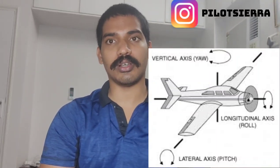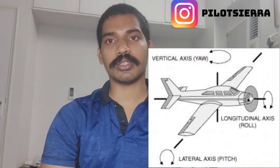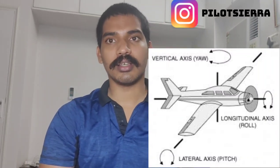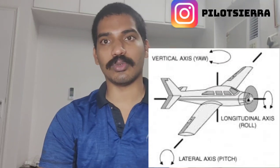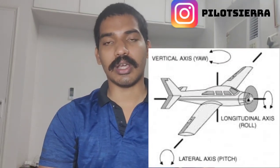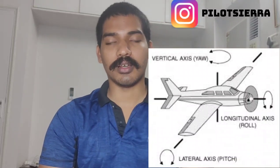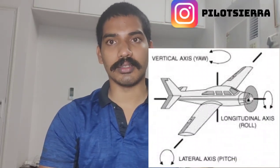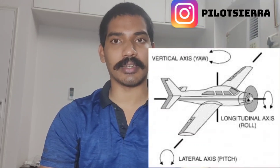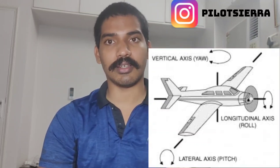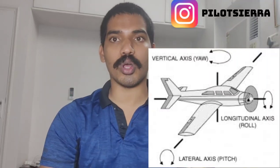Before we get into these three movements, I would like to talk about the three axes which cross the aircraft: longitudinal, lateral, and vertical. You might have studied this in school as the x, y, and z axes. In the case of an aircraft, these three axes pass through the point called the center of gravity, which is the point at which all the weight is concentrated inside the aircraft. You can find the link to that video in the description box below.